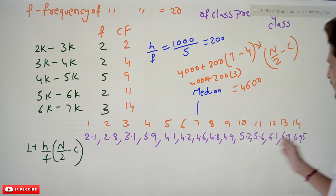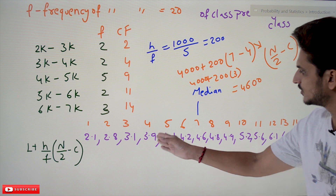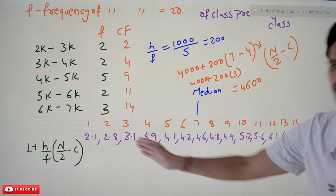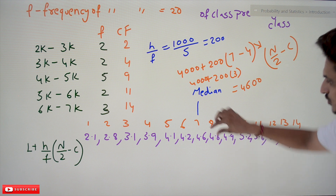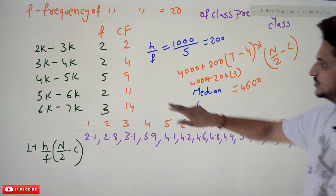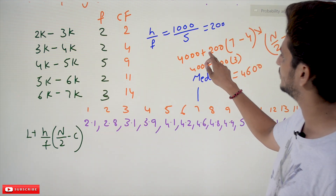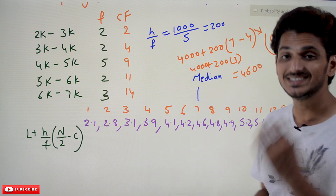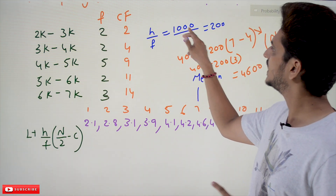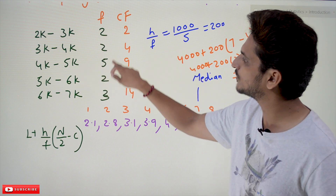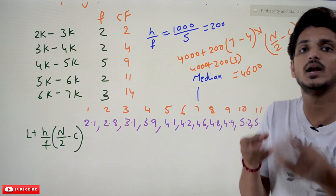With sample values like 4.1, 4.2, 4.6, 4.8, 4.9 for the 5 employees in 4k–5k: assigning 4000 leaves only 4 members on the left, missing central tendency. Assigning 5000 puts too many on the left. Using the formula: L = 4000, h = 1000, f = 5, so h/f = 200 — meaning each employee occupies 200 units of wage range.